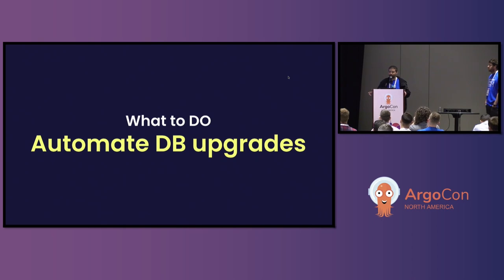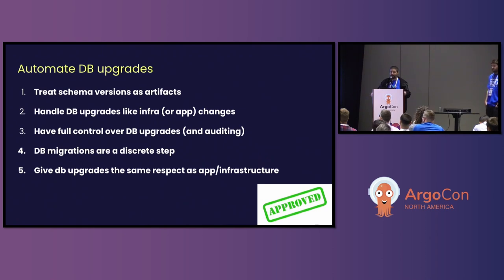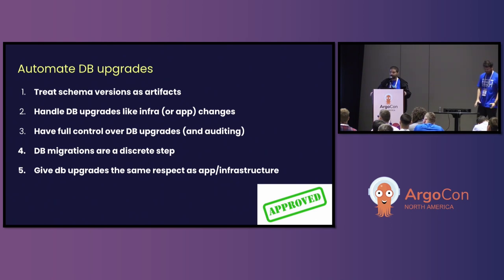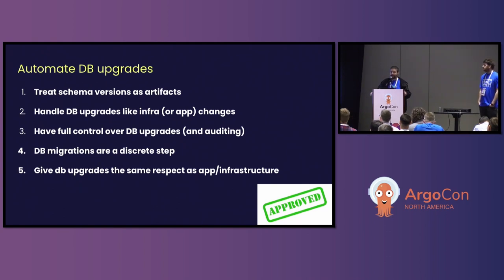So what should we do instead? It should be obvious — we should automate database migrations, and essentially handle them exactly the same way as application deployments. If you say that when deploying an application you have full control, you have your artifact, you know where your artifact is, you have a tool for orchestrating everything — you should do the exact same thing for database upgrades and treat the schema as another artifact. DB migration should be a discrete step. It should not be coupled with the application startup. It should have its own workflow and life cycle. Database upgrades should get the same respect as application upgrades.